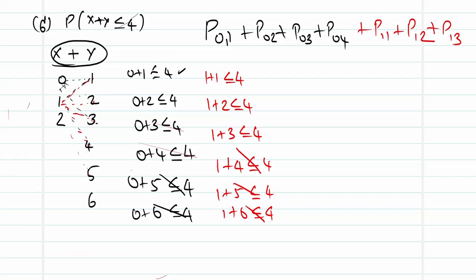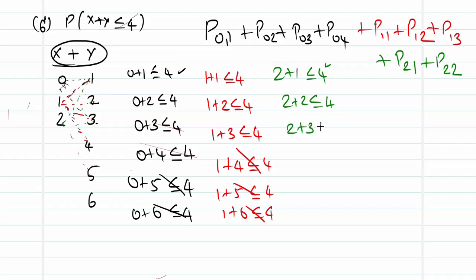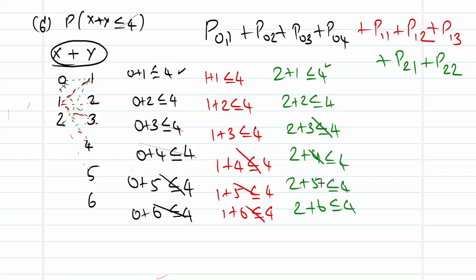For X = 2: 2+1 ≤ 4 ✓, take P(2,1); 2+2 = 4 ≤ 4 ✓, take P(2,2); 2+3 = 5, not ≤ 4, ignore. Similarly 2+4, 2+5, and 2+6 are all greater than 4 and are ignored. The valid pairs are: (0,1), (0,2), (0,3), (0,4), (1,1), (1,2), (1,3), (2,1), and (2,2).